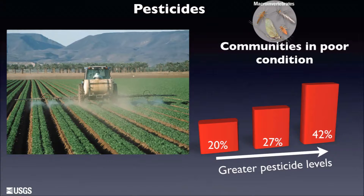In recent years, the EPA stepped up regulations on some of these insecticides, especially in urban areas, and NAWQA monitoring confirmed that those pesticide concentrations declined in the environment after EPA took those actions. However, when these pesticides were taken off the market they were replaced by other compounds with different chemical properties, so it will be important to continue monitoring how those chemicals behave in the environment and potentially affect ecosystems.